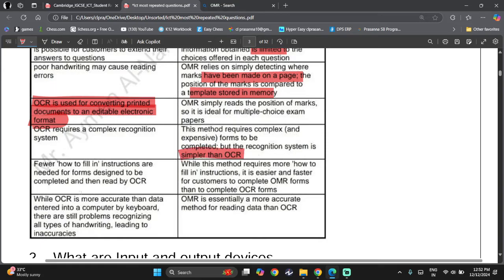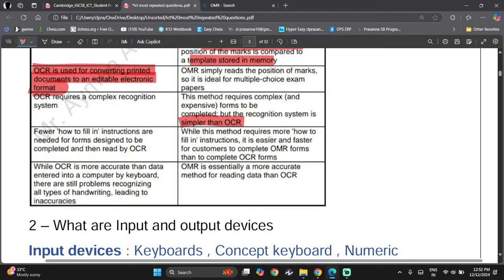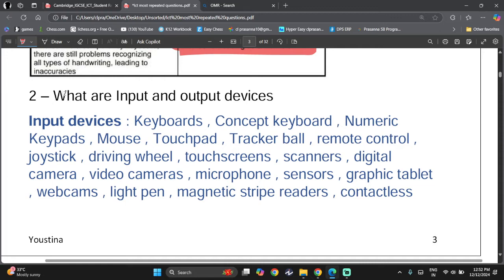But to be honest, OCR is more helpful and has more functions. While this method requires more how-to-fill-in instructions, it's easier and faster for customers to complete OMR forms than to complete OCR. OMR is essentially a more accurate method of reading data from OCR. Then, the next type of main type of question they ask, what are input and output devices?